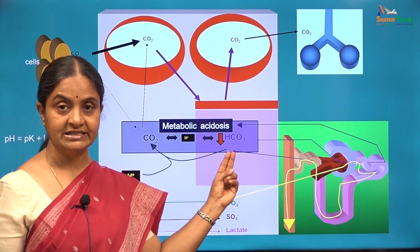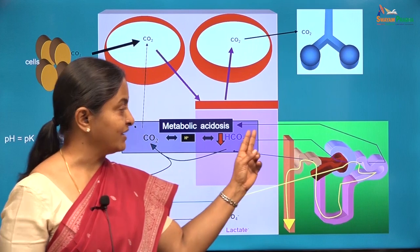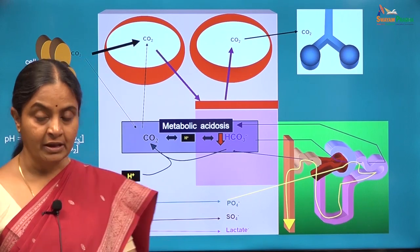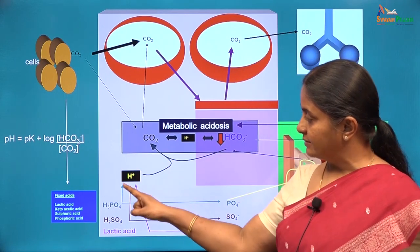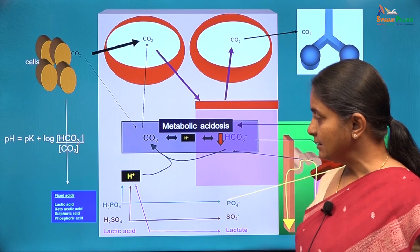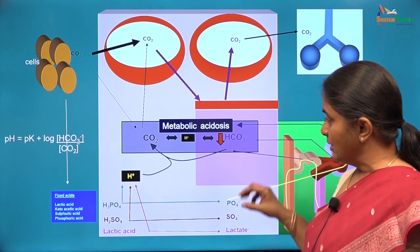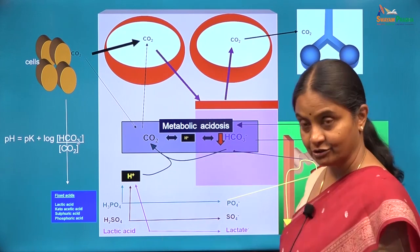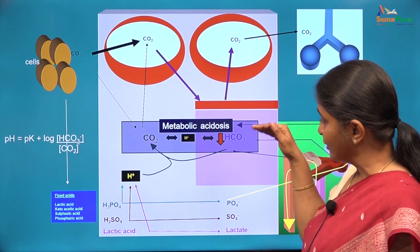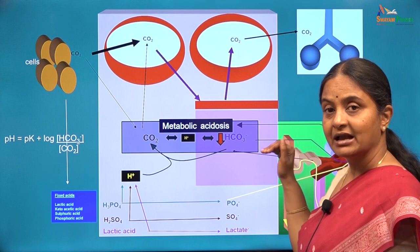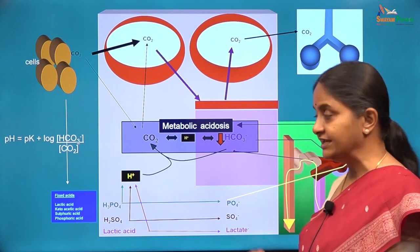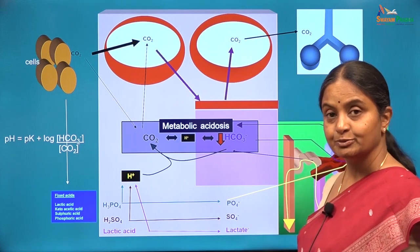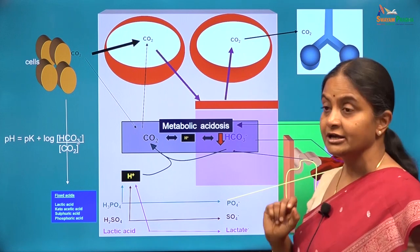Why would bicarbonate levels decrease in plasma? The kidneys may fail to reabsorb enough bicarbonate in the proximal tubule or generate enough bicarbonate in the distal tubule, or bicarbonate may be consumed by the fixed acid protons. The fixed acid anions will also compete with bicarbonate for the limited anion space, which is determined by the total number of cations. Similarly, chloride, which is the other major anion in plasma apart from bicarbonate, may also compete for bicarbonate space. These are the four major mechanisms: reduced formation, increased consumption, competition for anion space by the fixed acid anions, or competition for the space by chloride anions.